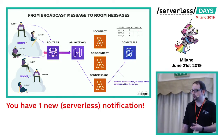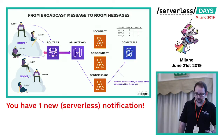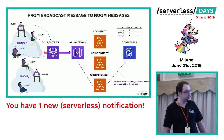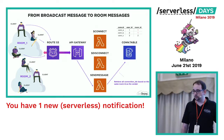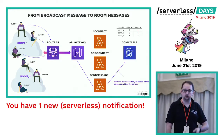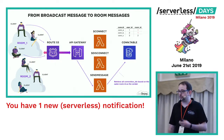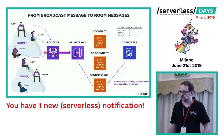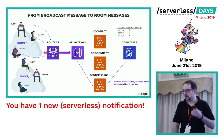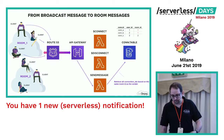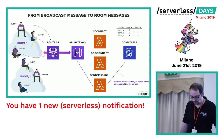By doing this, we decouple the creation of the new infrastructure from the client code, because Route 53 has a single URL value that remains the same all the time. Instead, the API Gateway can change its URL every time we deploy a new instance of this infrastructure.